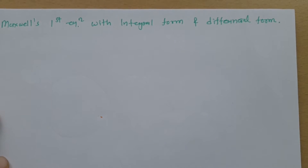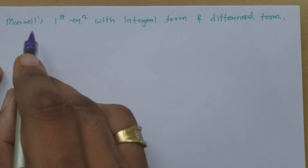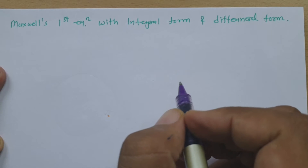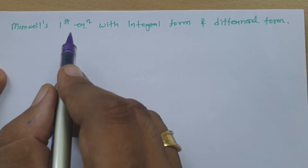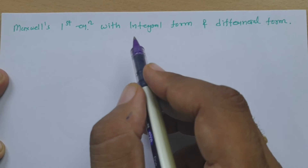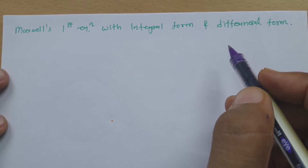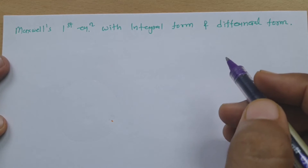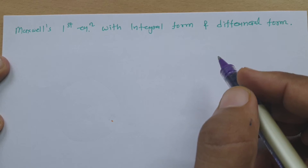Welcome to Electromagnetics Playlist. Professor Hitesh Dholakya is going to explain Maxwell's first equation with integral form and differential form. You should understand this Maxwell's first equation with integral form and differential form, which is based on Gauss's law for electric field. I have already explained Gauss's law for electric field in my previous session.